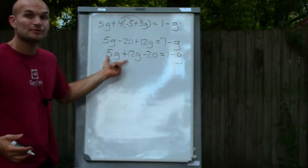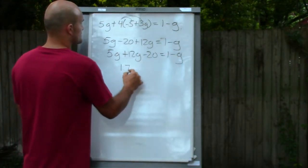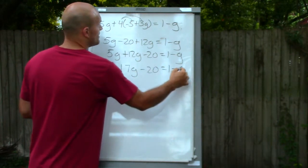I do this so you can see that you can combine your 5g and your 12g. You can combine like terms. Well, that's going to give you 17g minus 20 equals 1 minus g.